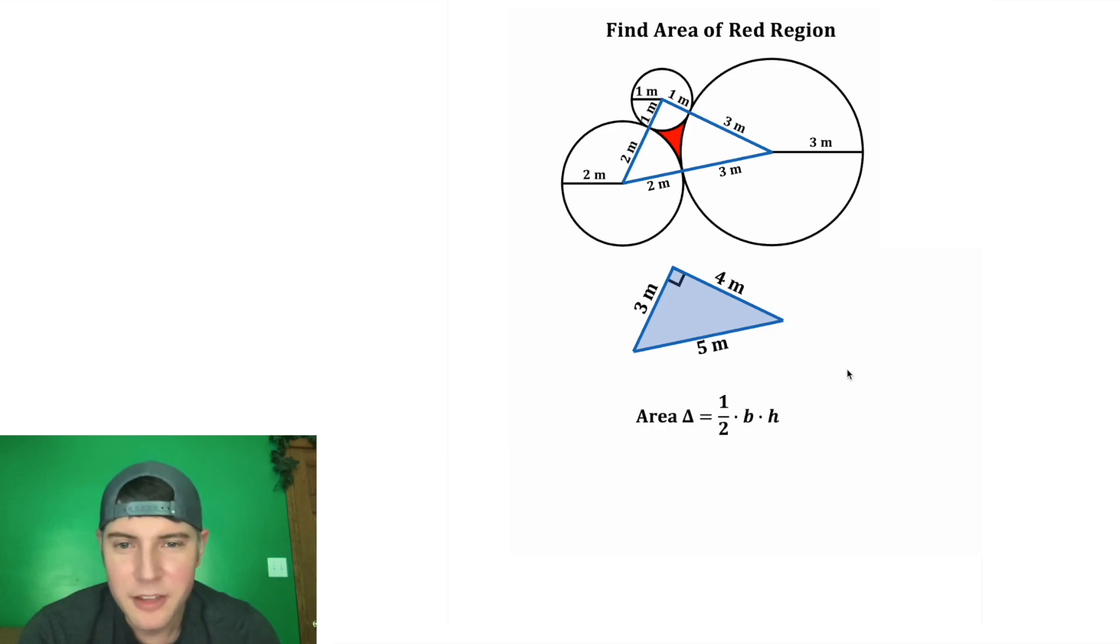Let's find the area of this whole triangle. The area of a triangle is 1 half base times height. So if we rotate this thing, we can see that the base is 4, and the height is 3. 4 times 3 is 12, and 1 half of 12 is 6. So the area of this triangle is equal to 6.